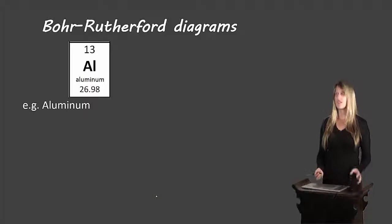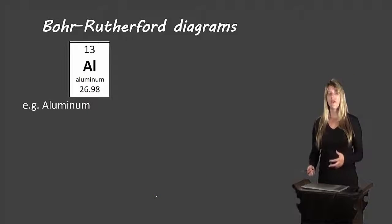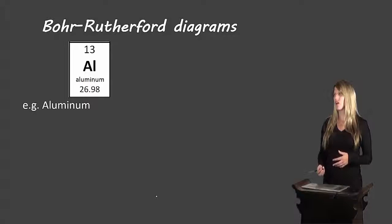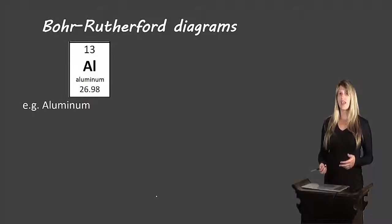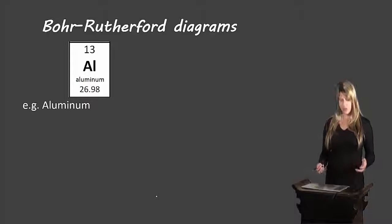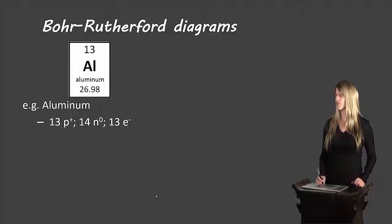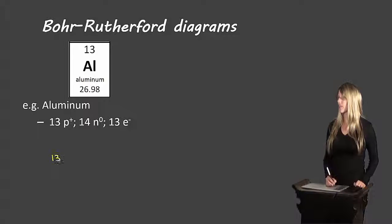Let's look at another example with aluminum. Aluminum has an atomic number of 13. So we know there are 13 protons and 13 electrons and the atomic mass is 26.98. If we round 26.98 we get 27. So 27 minus 13 is 14 which gives us 14 neutrons. So we can draw our aluminum like this.